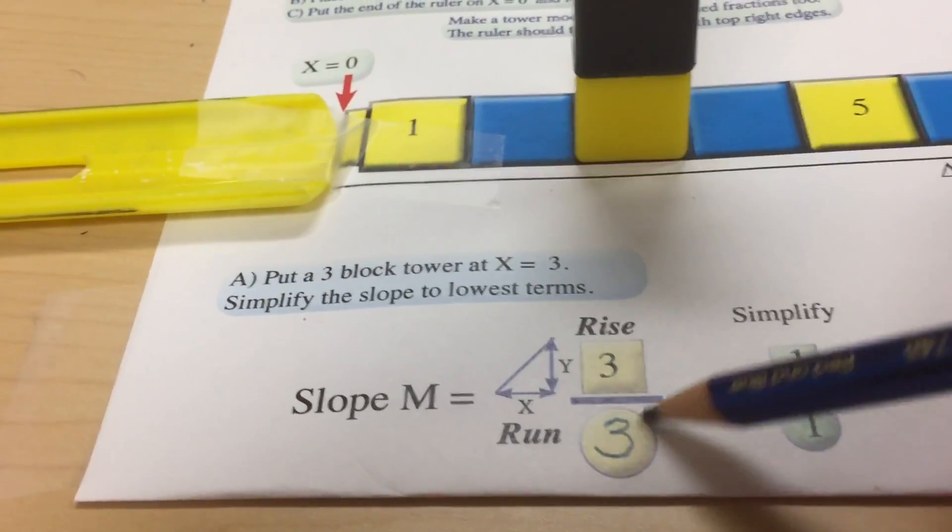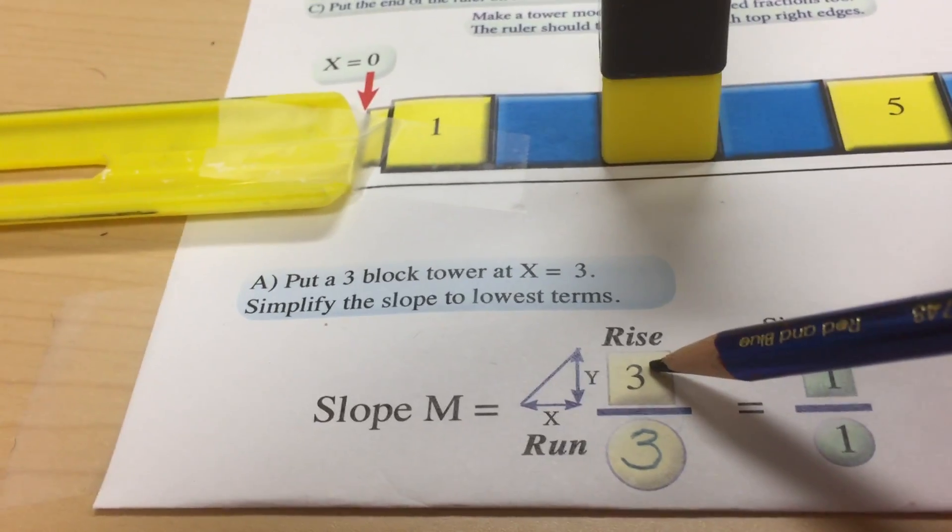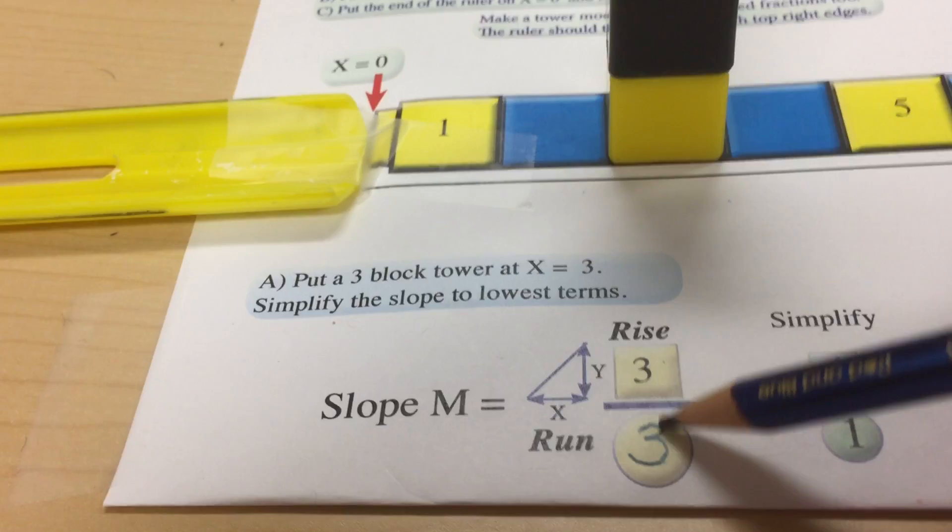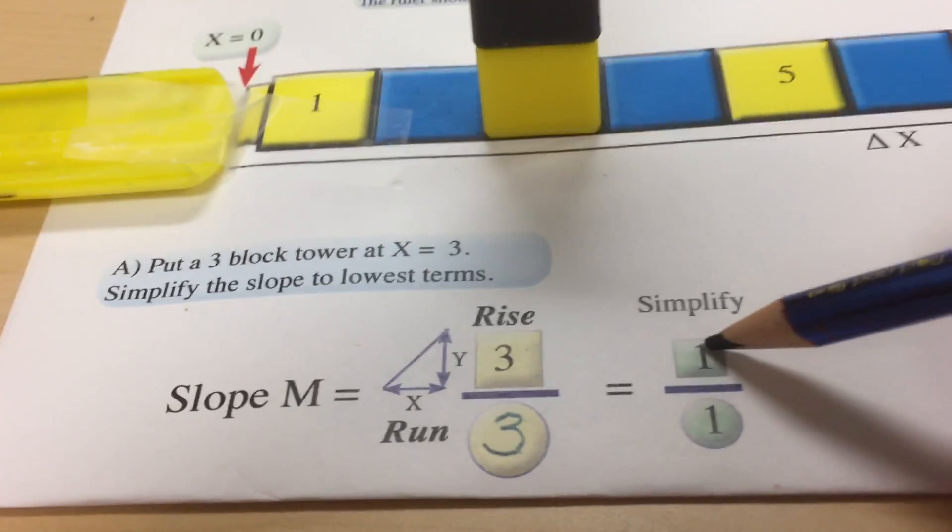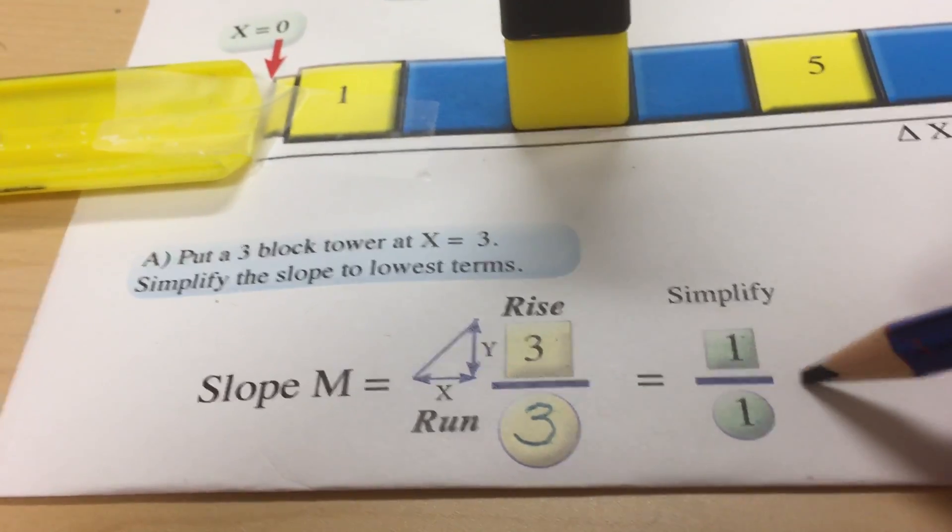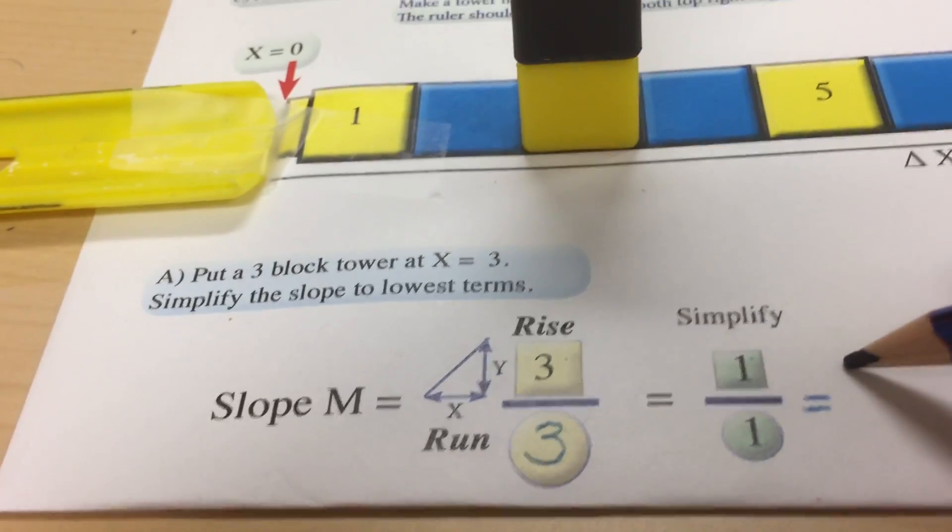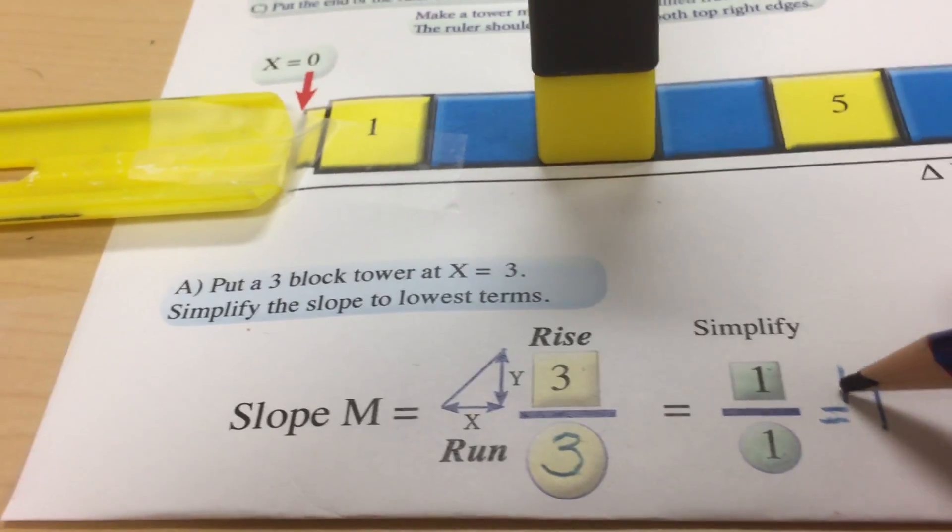Now we're going to compare this like a fraction. When I simplify this fraction three-thirds, we find that that's the same as one divided by one or one. That has a slope of positive one.